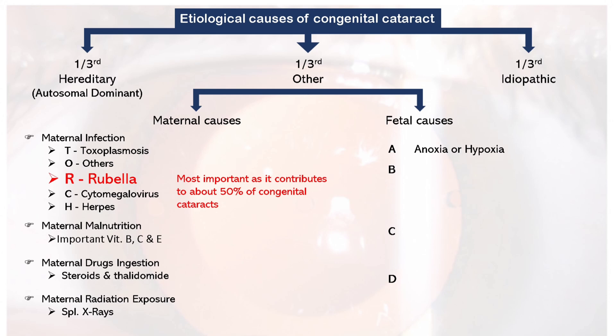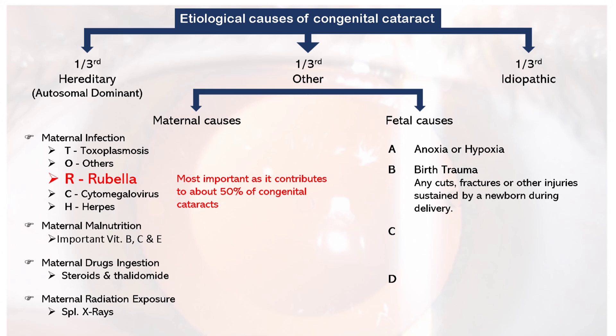B stands for birth trauma, a general term used to describe any cuts, fractures, or other injuries sustained by a newborn baby during labor or delivery. If any of these injuries reach the eye of the baby, it may lead to cataract. C stands for congenital anomalies, which can cause cataract, including Down syndrome, Lowe syndrome, and Alport syndrome.